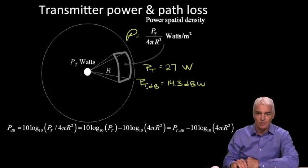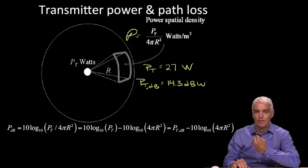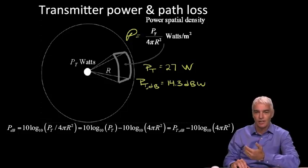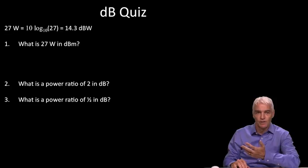So, now we can go back to our original slide and say, well, if the signal was transmitted with a power of 27 watts, what would that be in decibels? In dBW, it's just 10log₁₀(27), which gives us 14.3 dBW.